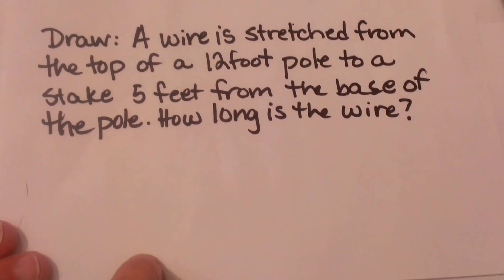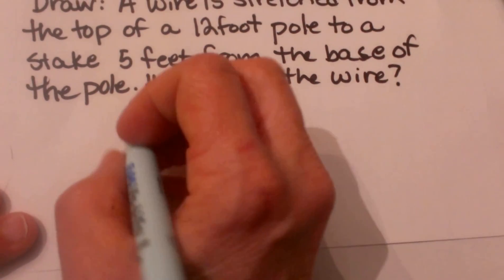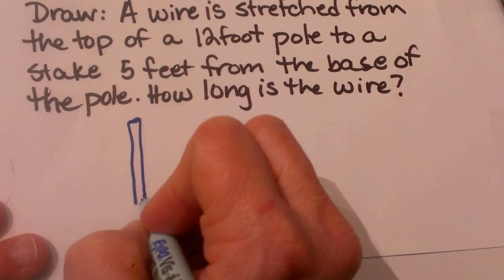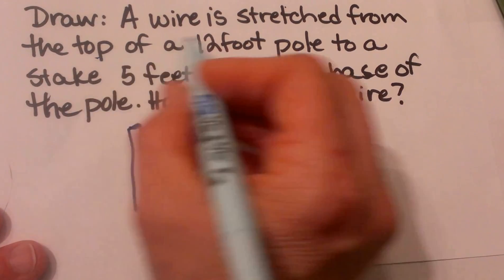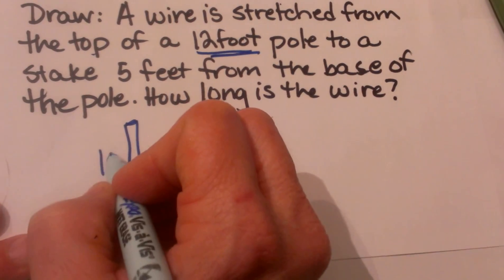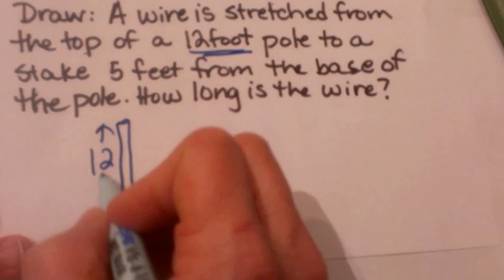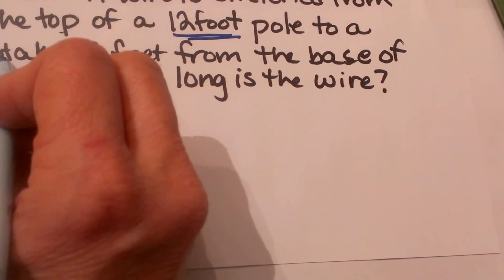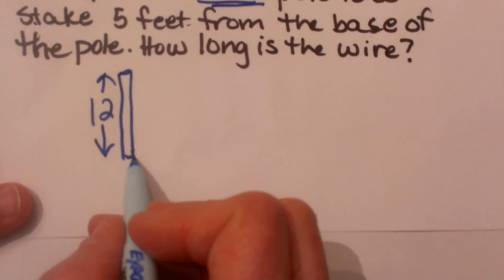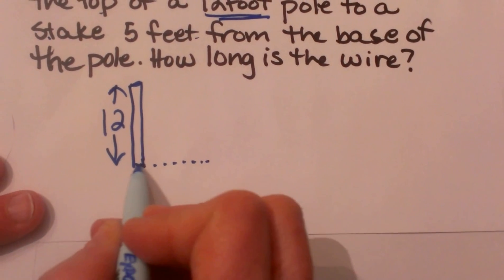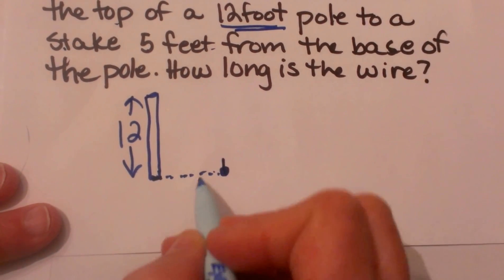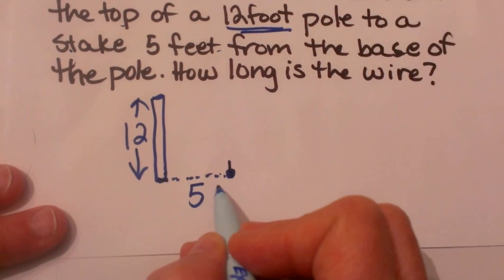Ok so let's think of what we have got here. We have got a pole. So let's draw a pole standing straight up. We know that the pole is 12 feet tall, so that means I can label this height of 12. And it says to a stake that is 5 feet from the base. So let's figure out where the stake is. Well here is the base of the pole. The stake is 5 feet away. So this is where the stake would be. So that measures 5 feet.